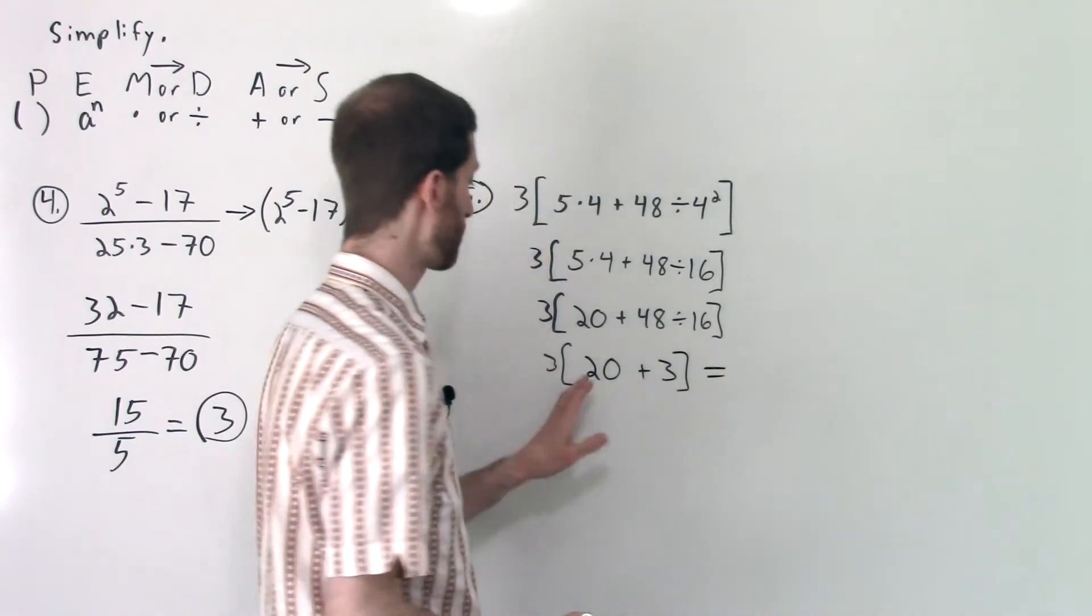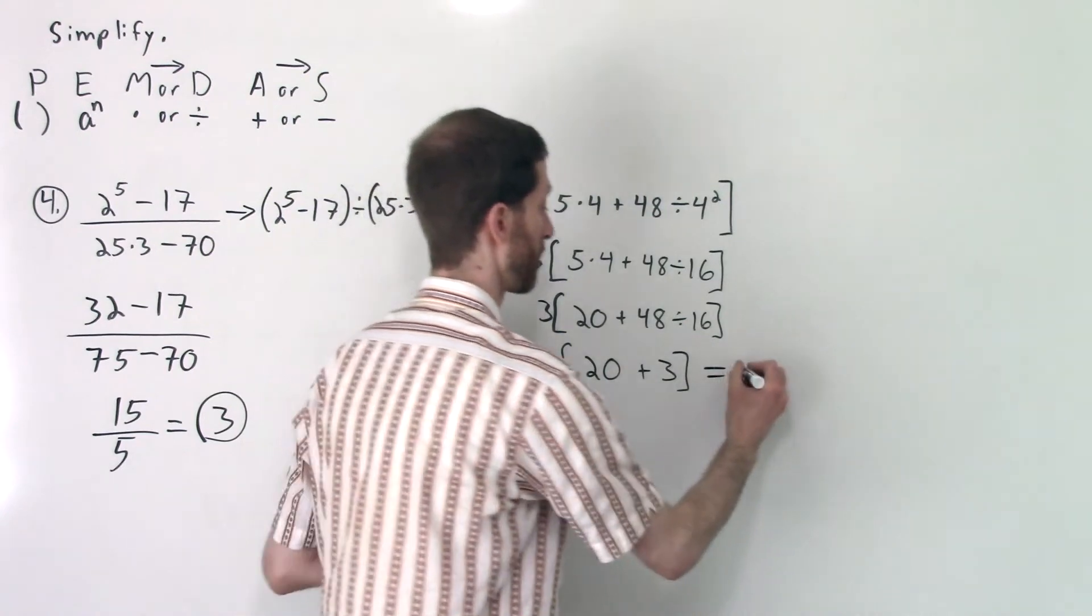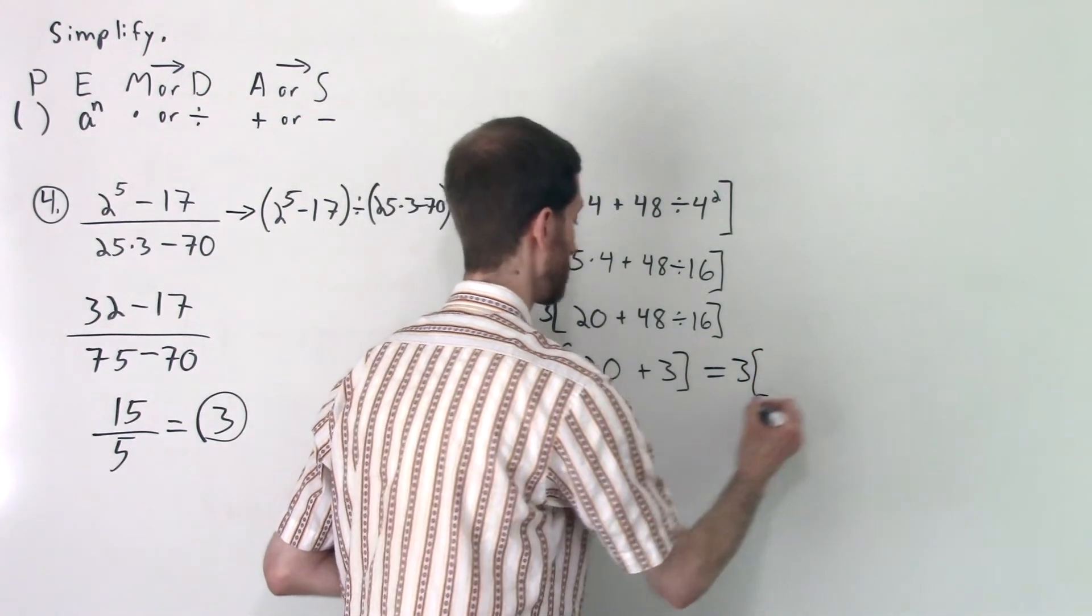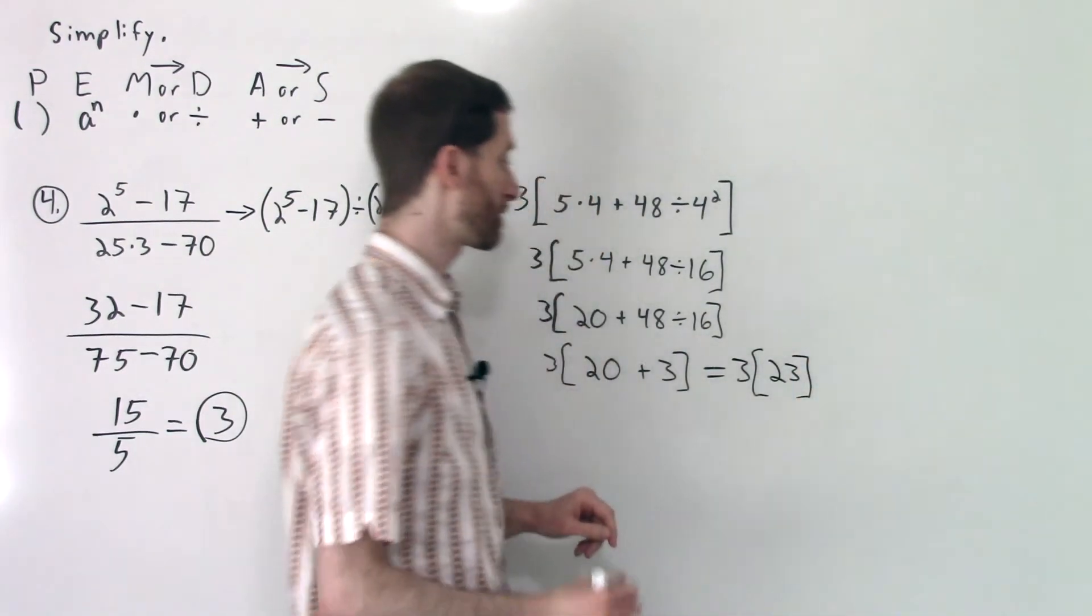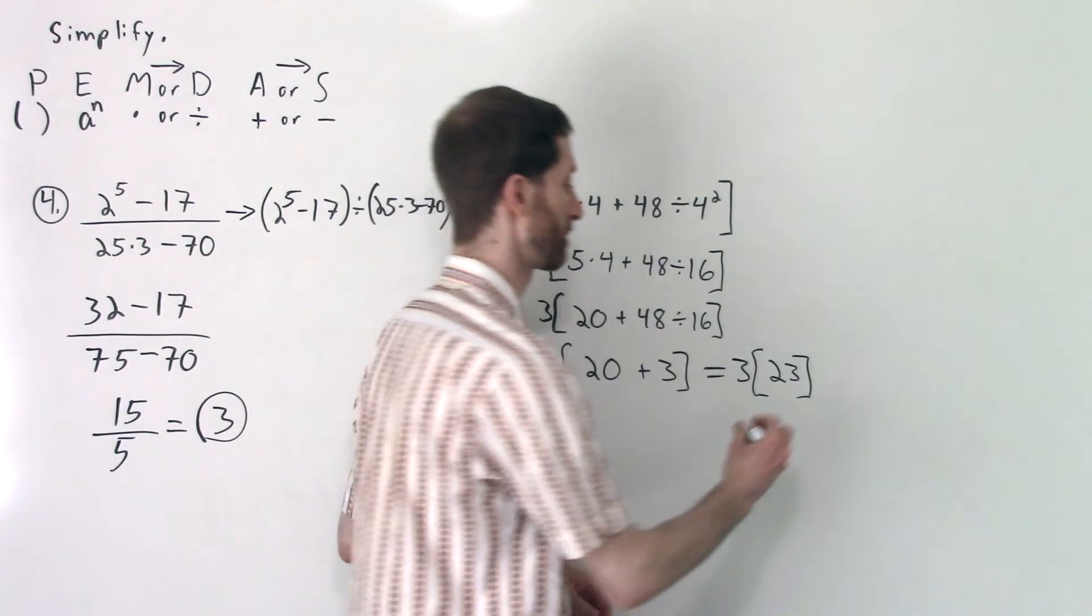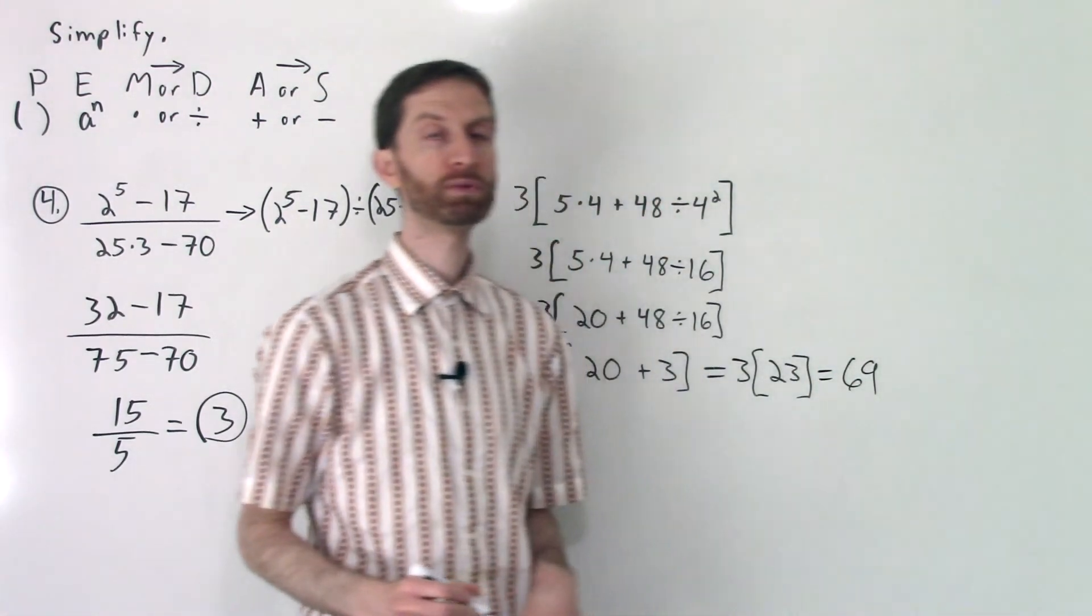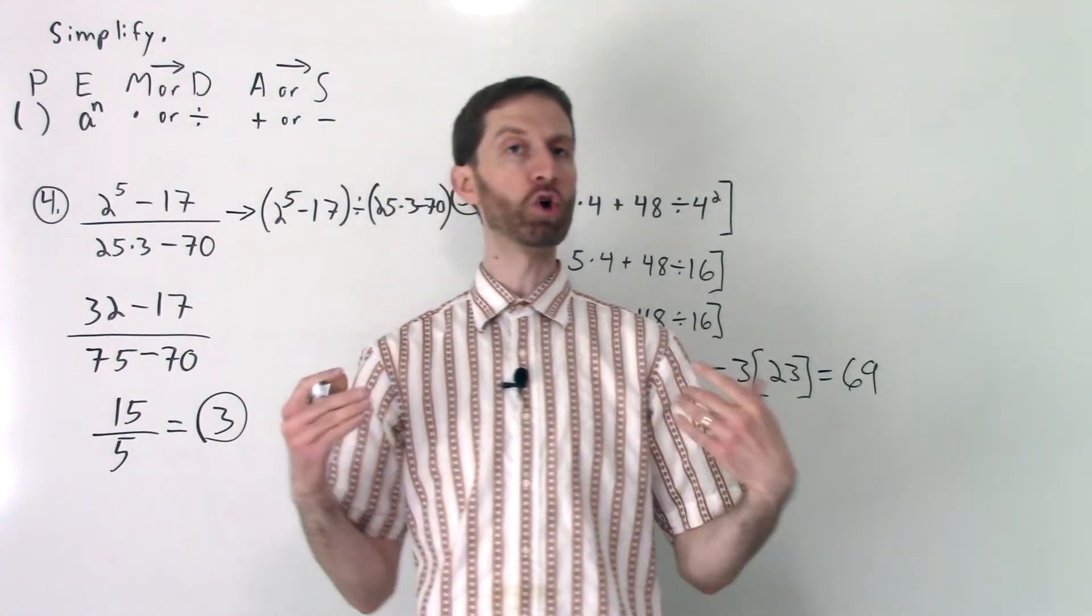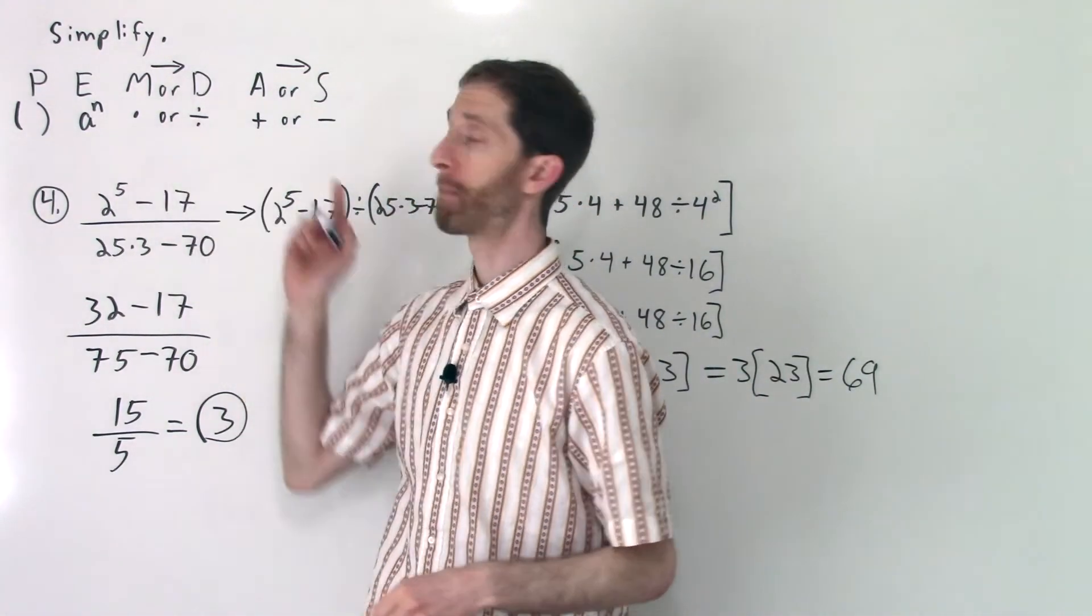And what we have left here is just addition inside the grouping symbols. 20 + 3 is 23. And so now 3 right next to brackets means multiplication. So we do 3 × 23, which is 69. That's it. The order of operations. Go rock it, no matter how complex the problems are. You're following PEMDAS.